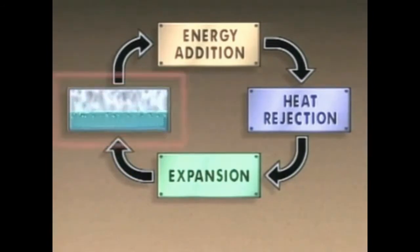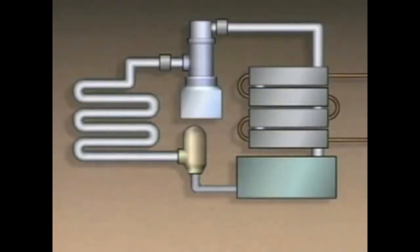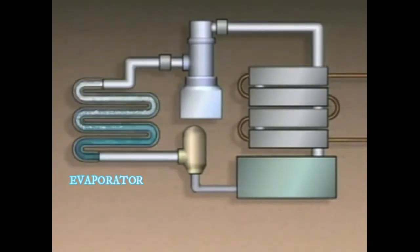In a vapor compression refrigeration cycle, the component in which the refrigerant absorbs heat is the evaporator. In the evaporator, the refrigerant evaporates and boils into a vapor. At the same time, the area around the evaporator is cooled.